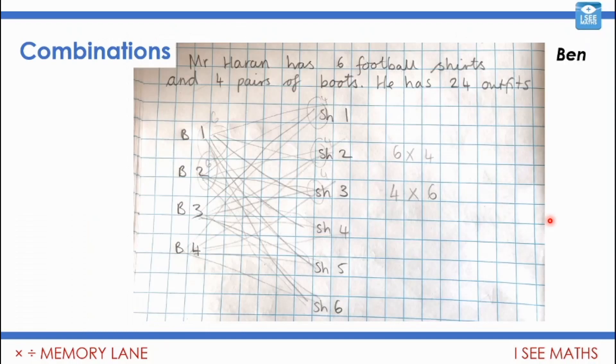I love this example from Ben. We're going to come to a question that Ben's written later, but look at this for a combinations example. We've been looking at lots of different forms of multiplication. Mr. Harron has six football shirts and four pairs of boots. He has 24 outfits. Can you see how Ben has shown that? For each pair of boots he could wear each of those six shirts. So in total, this is actually a multiplication.